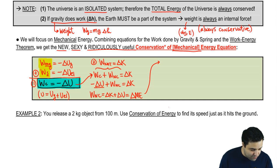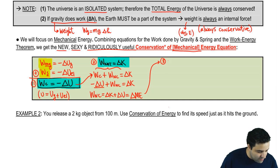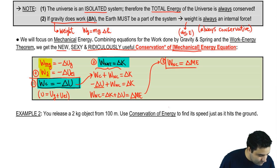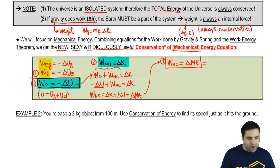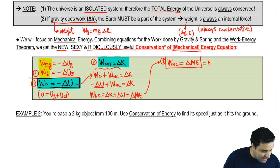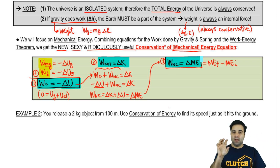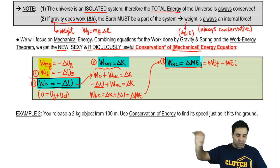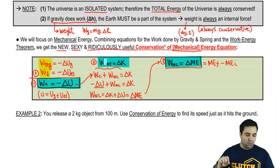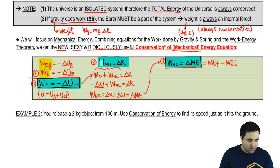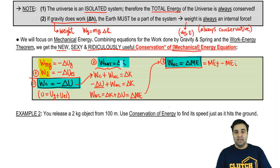Delta K plus delta U are the two types of mechanical energy, so this is the change in total mechanical energy. That is the key new equation: work done by non-conservative forces equals the change in mechanical energy. The change in mechanical energy is mechanical final minus mechanical initial. So there are three equations to know: work done by conservative forces is the negative of the change in potential energy; work done by non-conservative forces is the change in total mechanical energy; and total work is the change in kinetic energy.